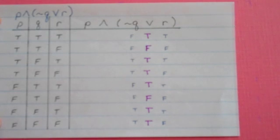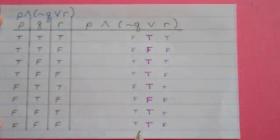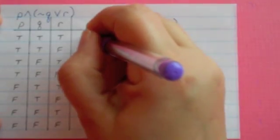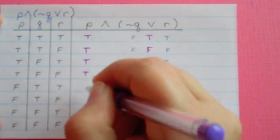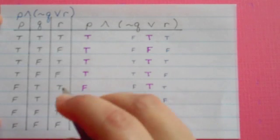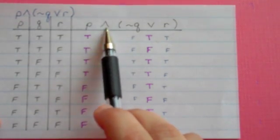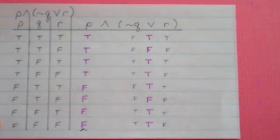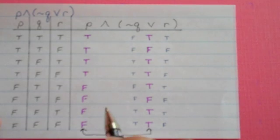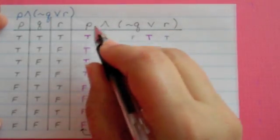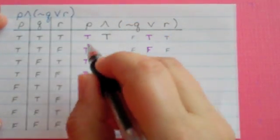Remembering the rule: if there's a true, it's true. My next step, now that I've finished my column for the parentheses, is to figure out P. We already know P: it's four trues followed by four falses. For my very last step, I apply this AND between the column for P and the answer column to my OR. Remember the rule for AND: if there's a false, it's false. So true AND true is true, true AND false is false.